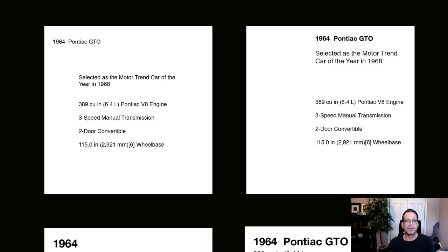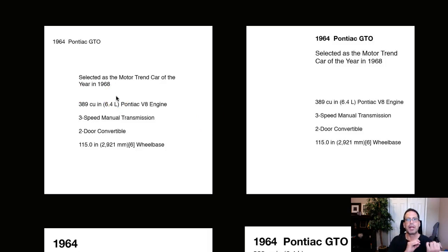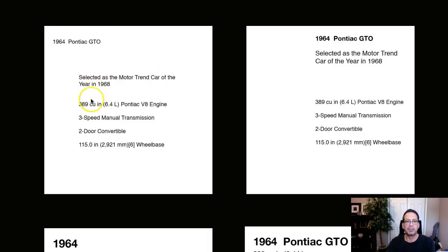In the first design, we want no contrasts at all, so we're really thinking about establishing all hierarchy based on spacing. We're just going to create some sort of hierarchy here based on the way that things are grouped. This is an excellent job — obviously we're talking about the car up here, and then 'Selected as Motor Car Trend of the Year in 1968' is separated a little bit from these three, indicating to the viewer that this is separate, it doesn't belong with these three. And that's exactly right.